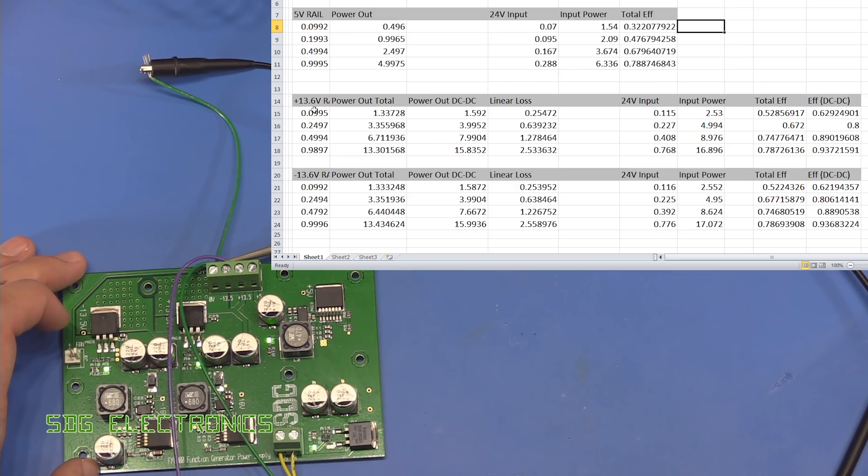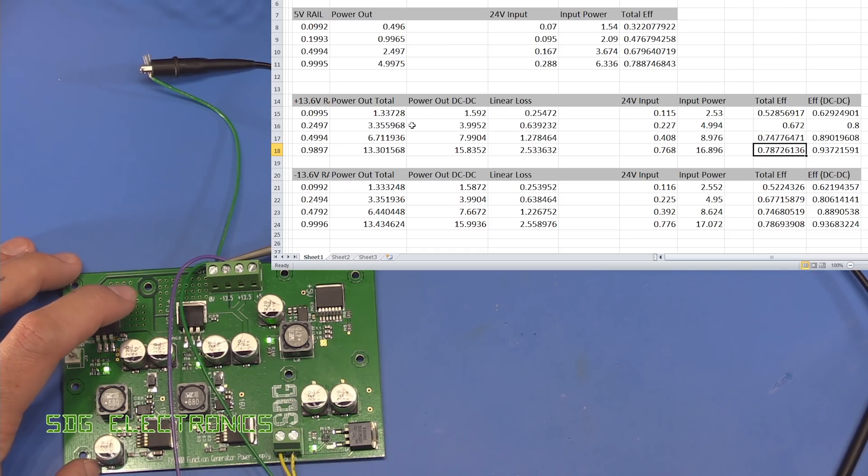On the 13 and a half volt rails, we're actually very similar on both the negative and positive rails. So that's a good sign that there's not something going wrong on this negative rail. When we have a look at the efficiency at 100 milliamps or 1.3 watts, we're about 50% efficient. When we go all the way up to 13 watts being drawn at the output, we're now looking very much closer to 80% efficient, which is pretty good considering we've got that linear regulator in place.